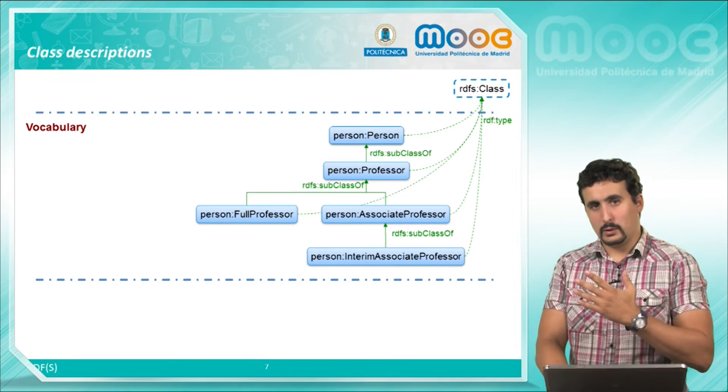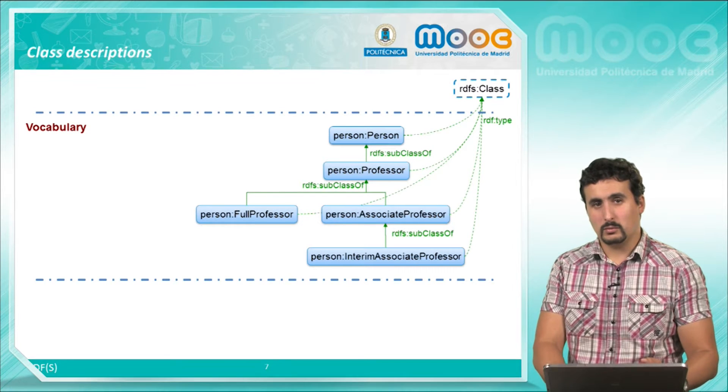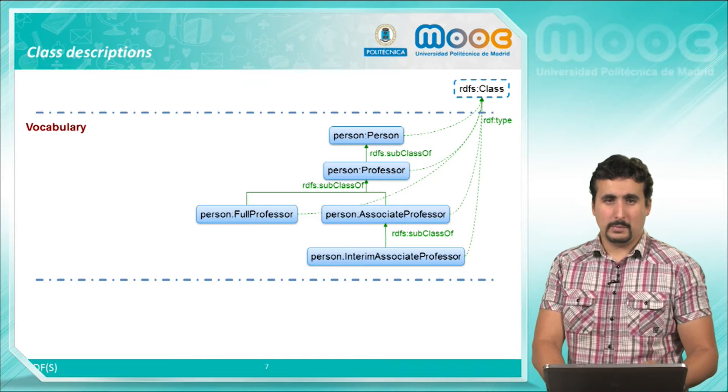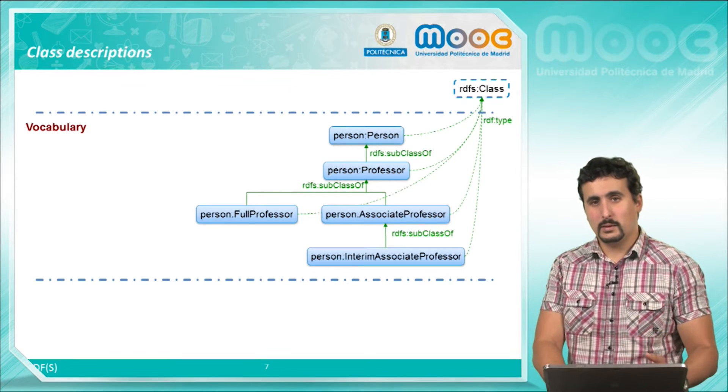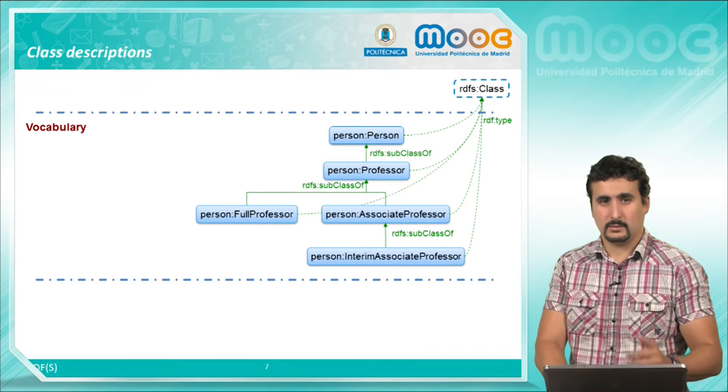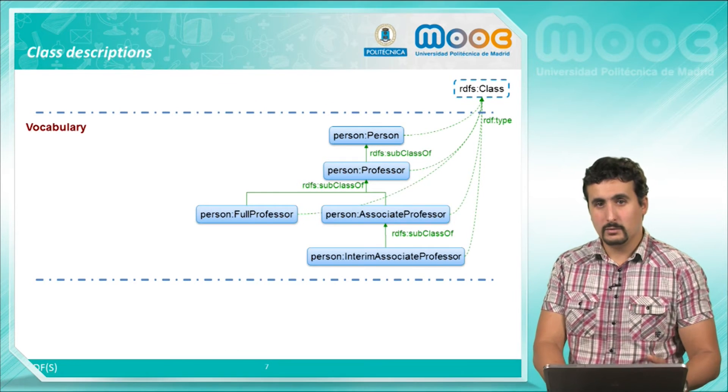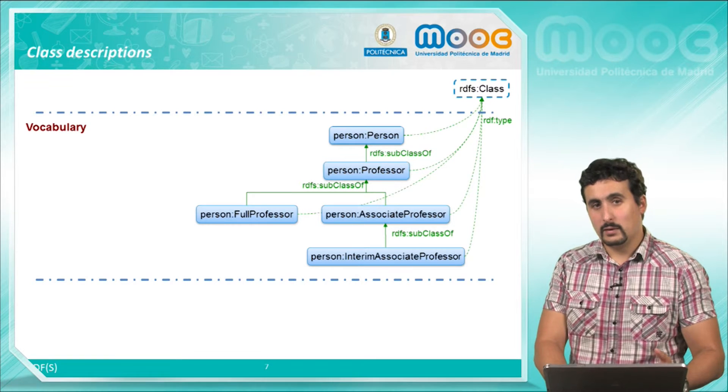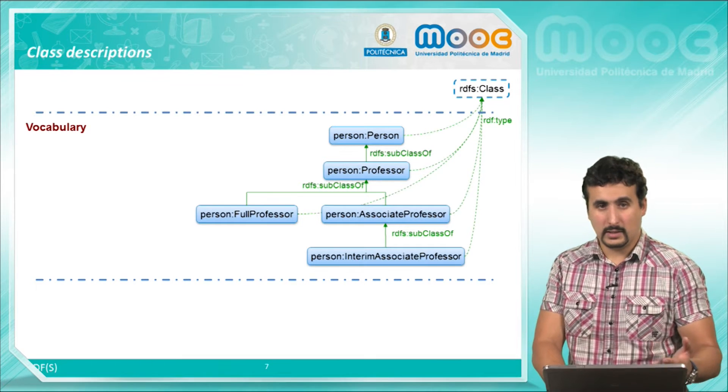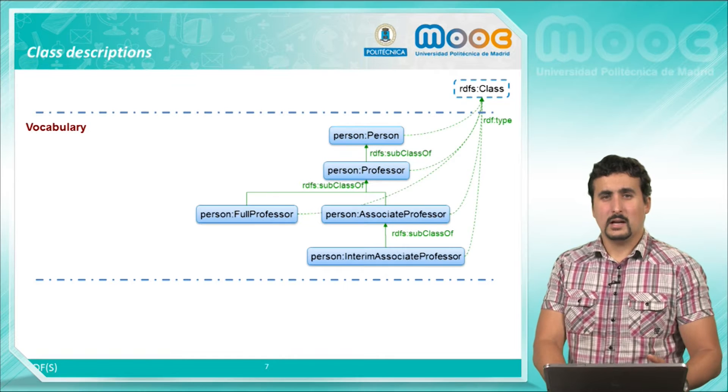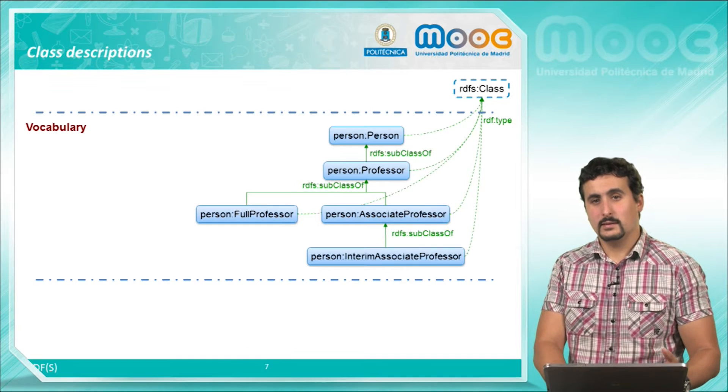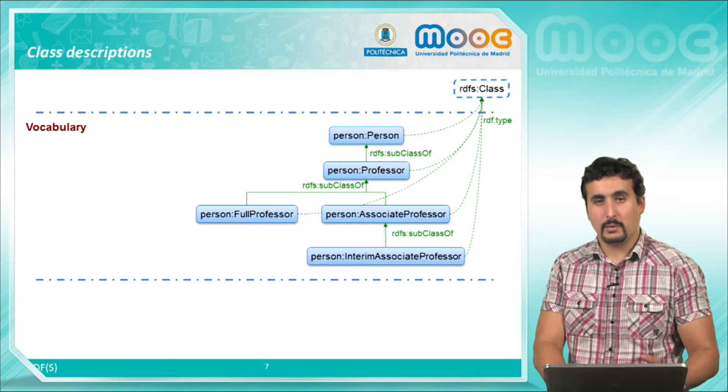Here we see a vocabulary defining information about university professors. By means of the RDF subclass property we have a hierarchy of classes, from the most general term of a person to the different levels of professor that can be found in a university. All these elements are defined as RDF classes by means of the RDF type property.